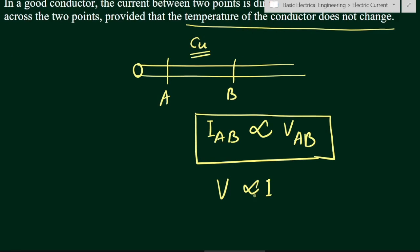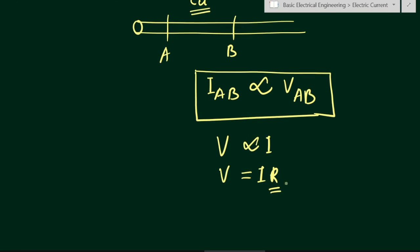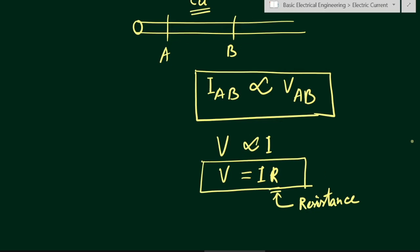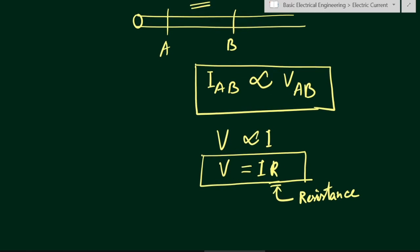If we want to remove this proportionality, V equals I multiplied by a constant. This constant is nothing but the resistance. This formula — V = IR — is most widely used in any kind of electronic circuit carrying current. Resistance is defined as the property of the material.